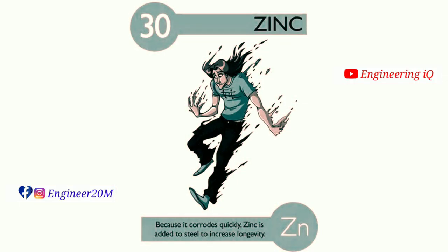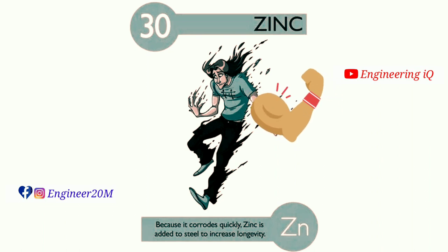Zinc: atomic number of zinc is 30. Because it corrodes slowly, zinc is added to steel to increase longevity. It is denoted by Zn.